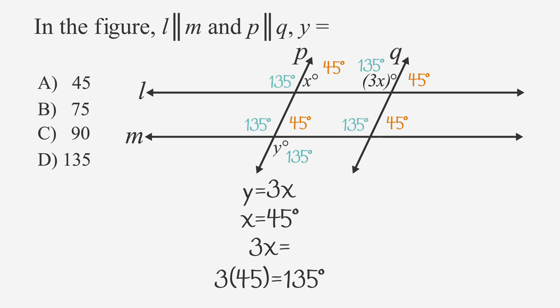Since X and Y are on the same line, they should add up to 180. Let's check this. Substituting 45 in for X, we get that Y plus 45 is equal to 180, or that Y is equal to 135.